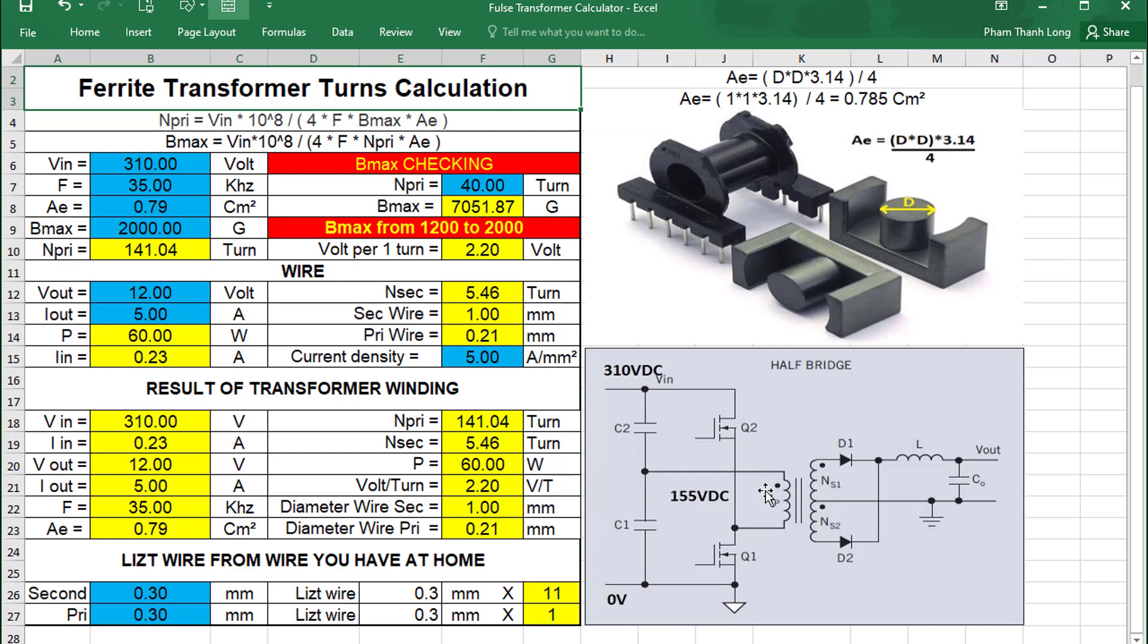Specifically, the voltage 220 VAC after the diode and capacitor bridge will be 310 volts, the voltage in the coil is 155 volts. The operating frequency depends on the control circuit, here I choose 65 kilohertz.